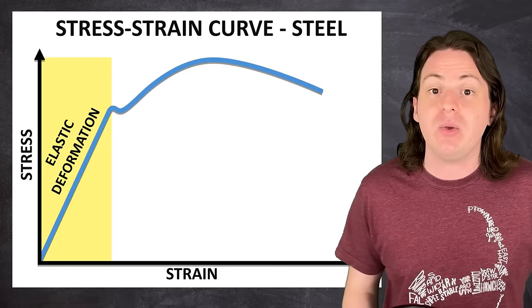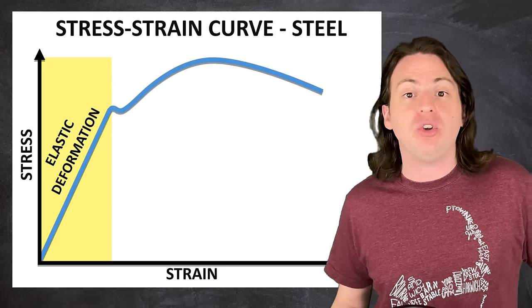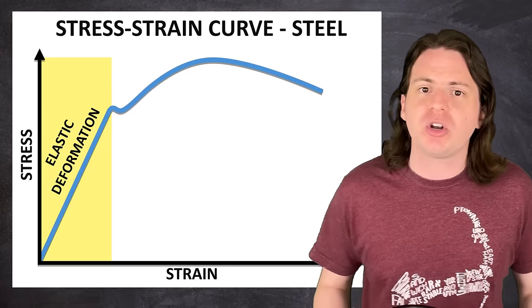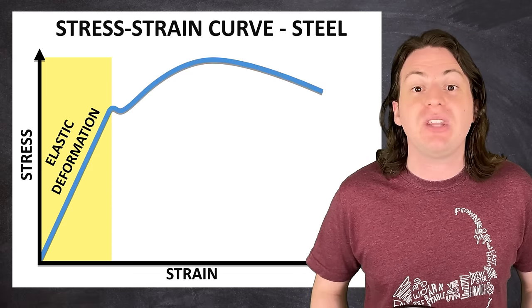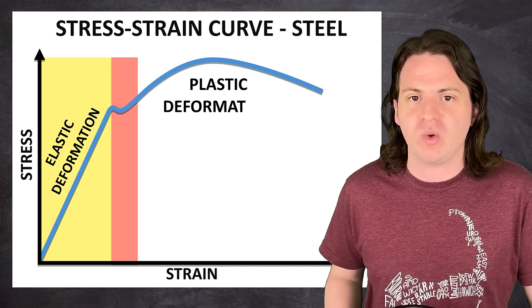The straight part at the beginning is the elastic deformation region. This is the area where you can bend steel, and it will spring back to its original shape. After a certain amount of strain, though, it enters the plastic deformation region,